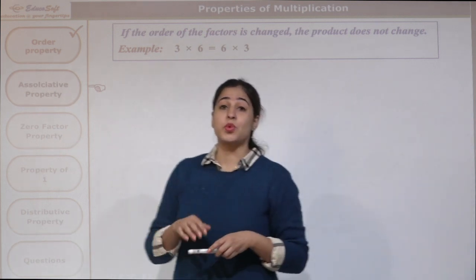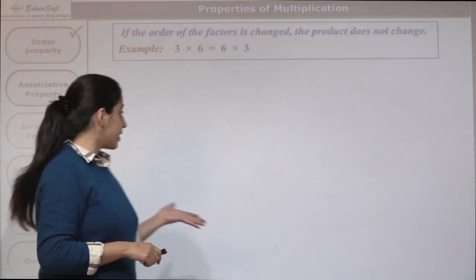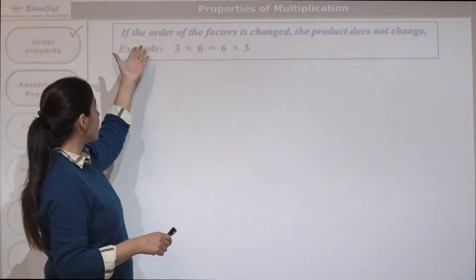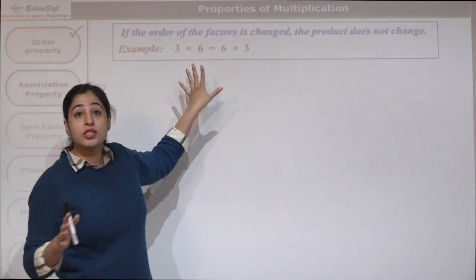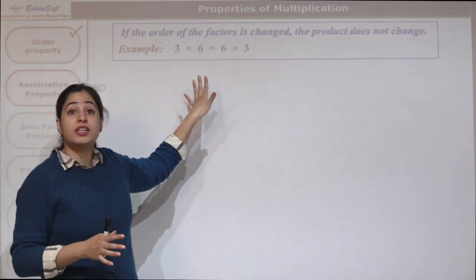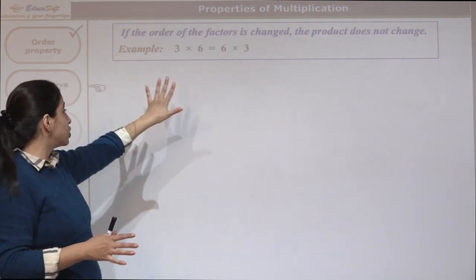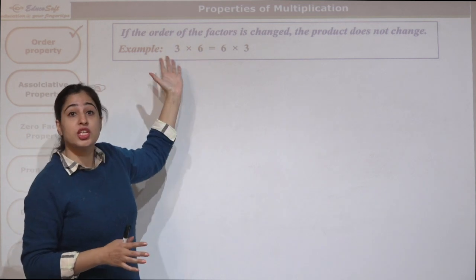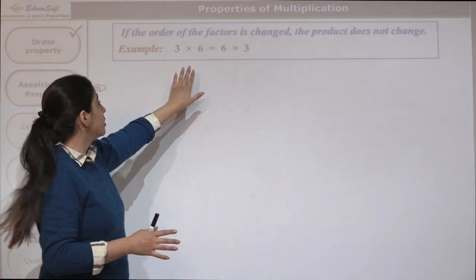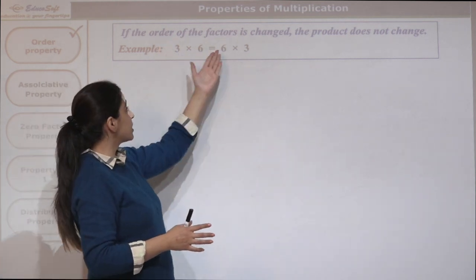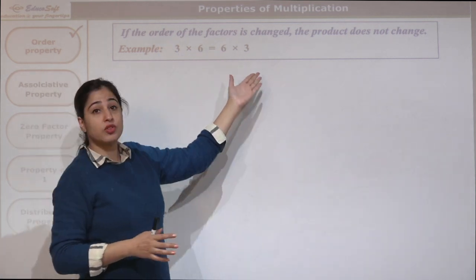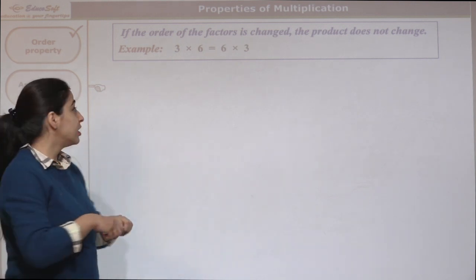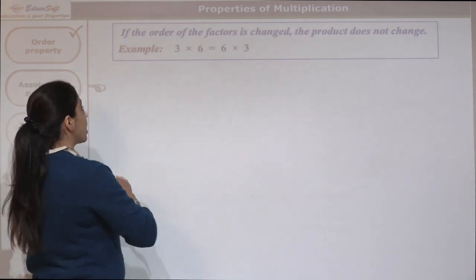What does this property say? This property says that if the orders of the factors are changed — for example, this is 3 times 6. If we change the order, we will get 6 first and then 3. What happens to the product? Let's see.